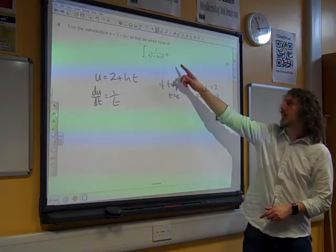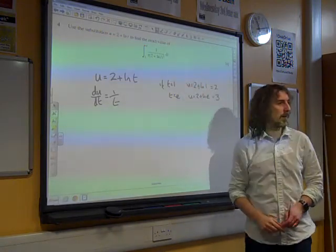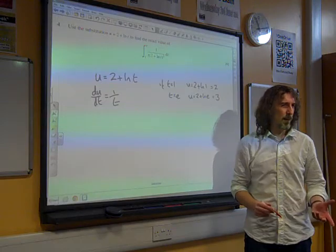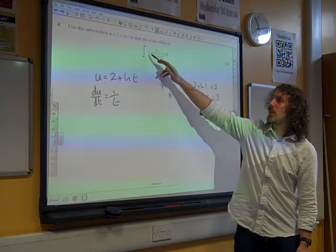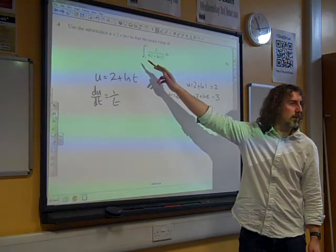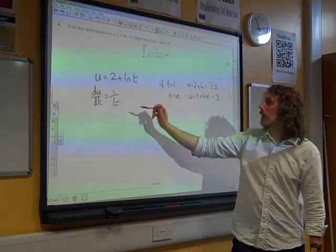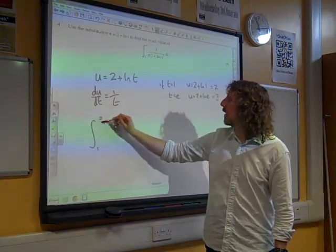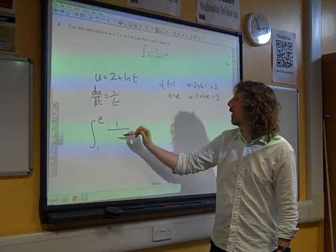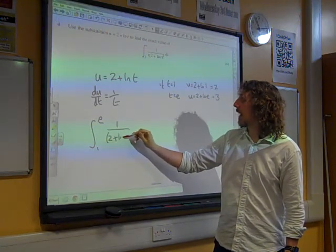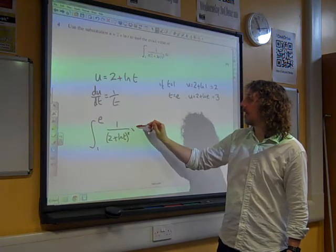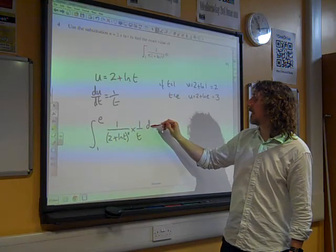How are we going to get this whole dt bit out of there? Well, actually, can we see it? We've got 1 over t appearing inside this. What we can think about this integral, you might not write this, but this is 1 over (2 + ln t)² times 1 over t dt.